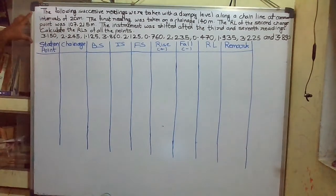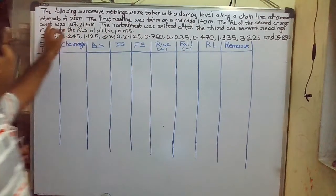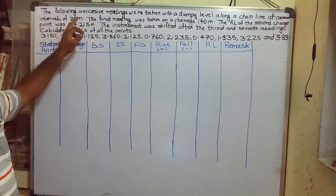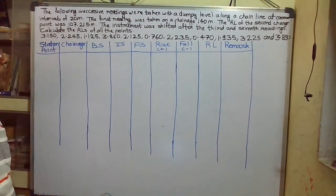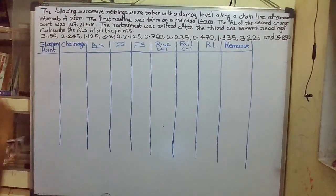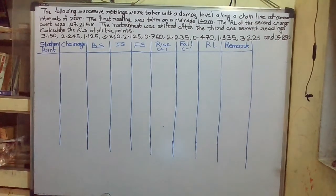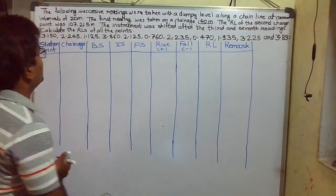Here is one numerical. The following successive readings were taken with a dumpy level along a chain line at a format interval of 20 meters. The first reading was taken on the chain range of 140 meters. The RL of the second change point is 107.215 meters.